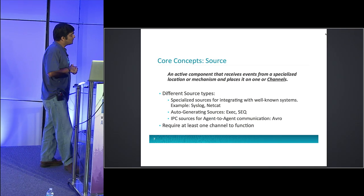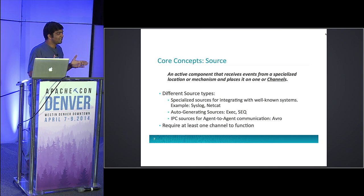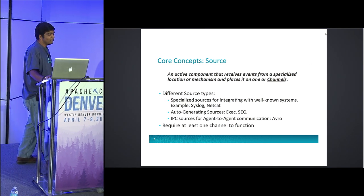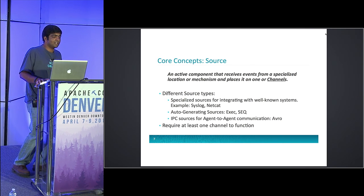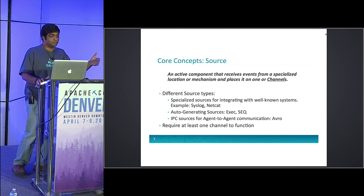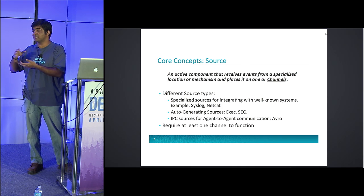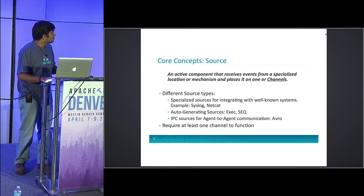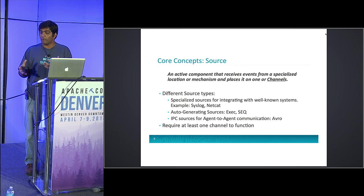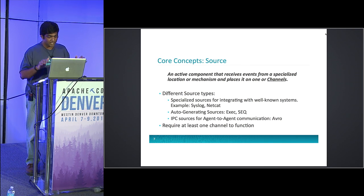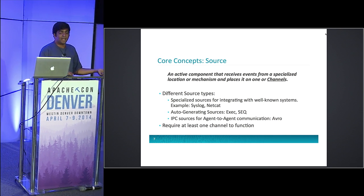When we look at the Flume agent, we talked about three components — sources, channels, and sinks — going pretty much left to right. When data is coming into Flume, something has to receive it — just like an HTTP server. If you don't have a server running on that port, you won't be able to send or receive anything. The source is the component which receives data from your client, whether via syslog, Avro, or some other mechanism. Each source basically does two things: receive the data and put it onto a channel.